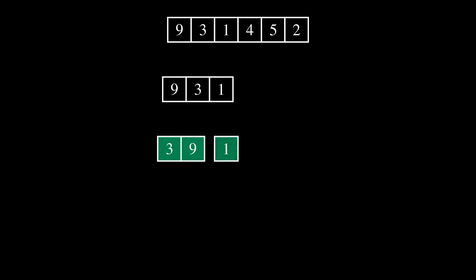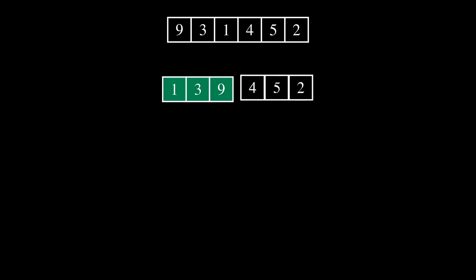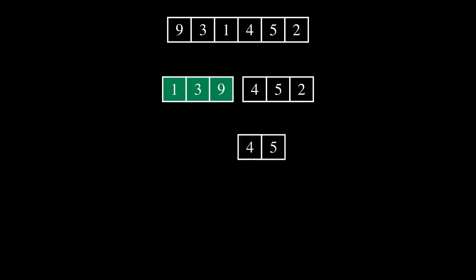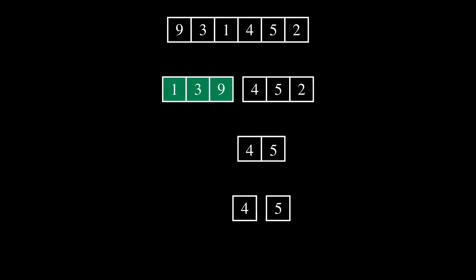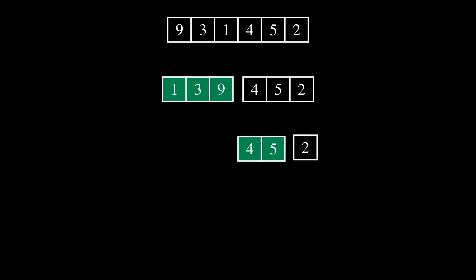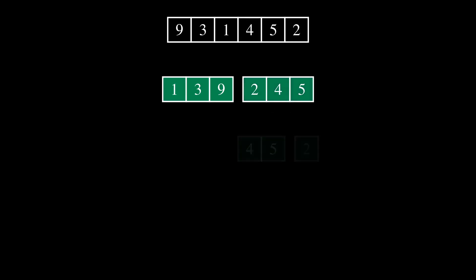Let's recap what is merge sort. It will help you to see sorting and merging. Merge sort is a sorting algorithm that follows the divide and conquer approach to sort a list of elements. It divides the input list into smaller sub-lists, recursively sorts them, and then merges them back together to produce a sorted output. Let's see merge sort in action.